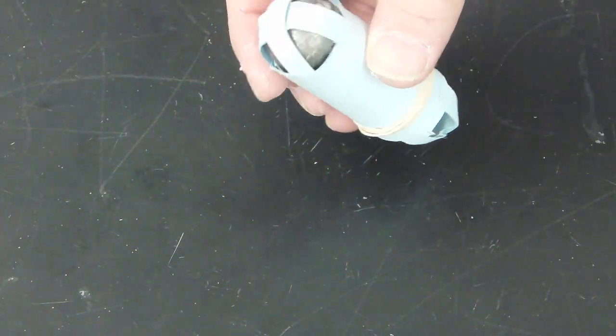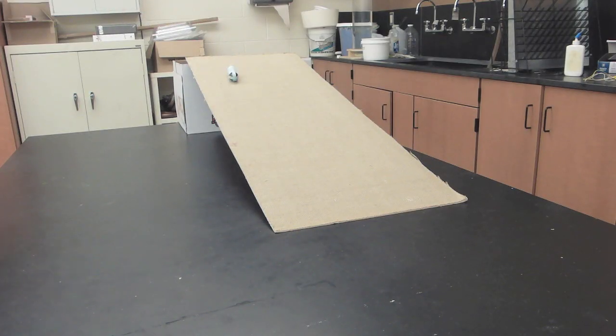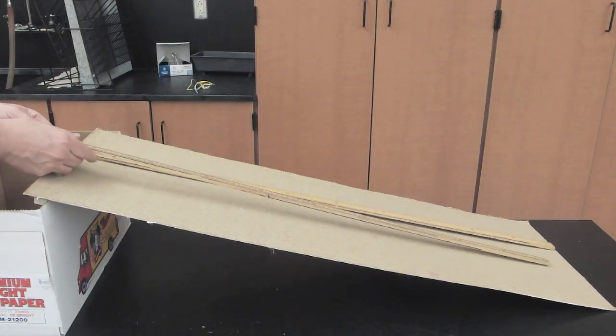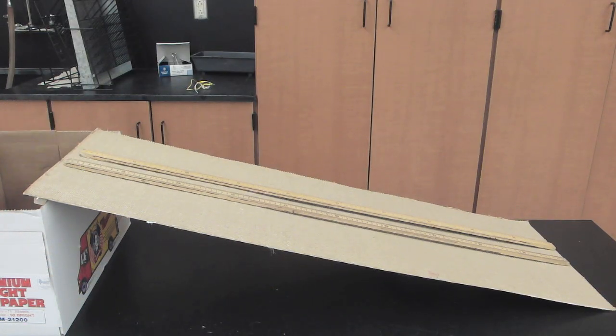The glue is dry. Let's see how it works. In some cases, I'll put meter sticks on the ramp just to keep the tumbling toys in a straight path.